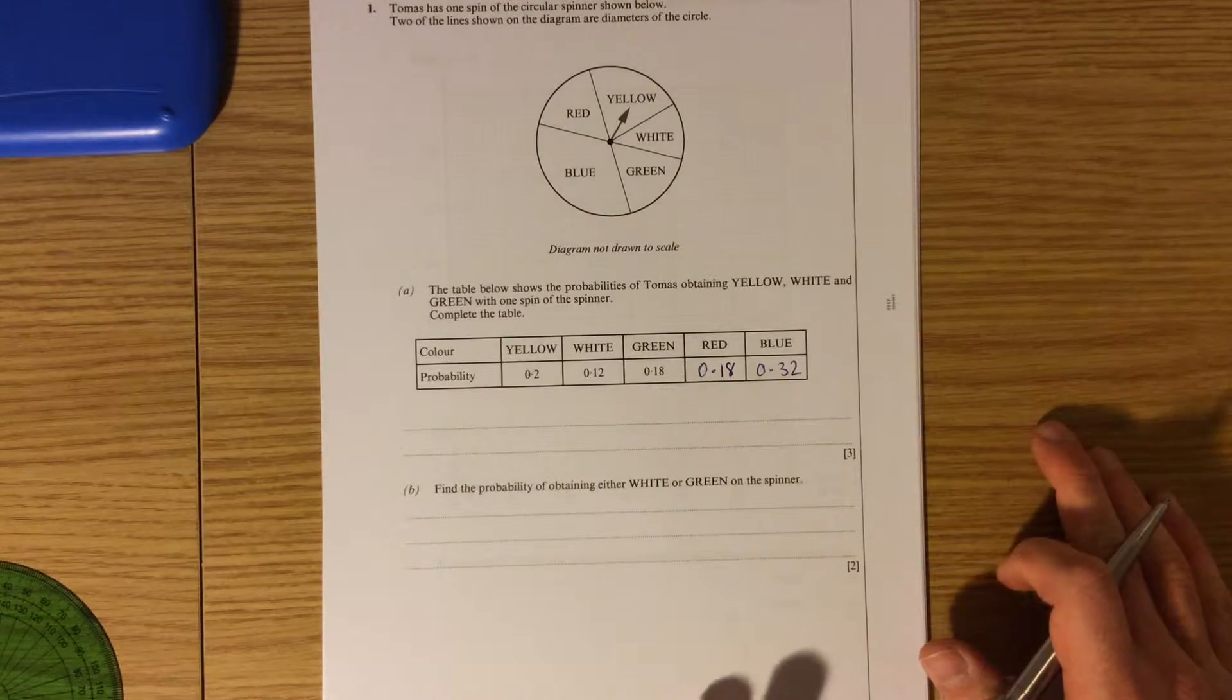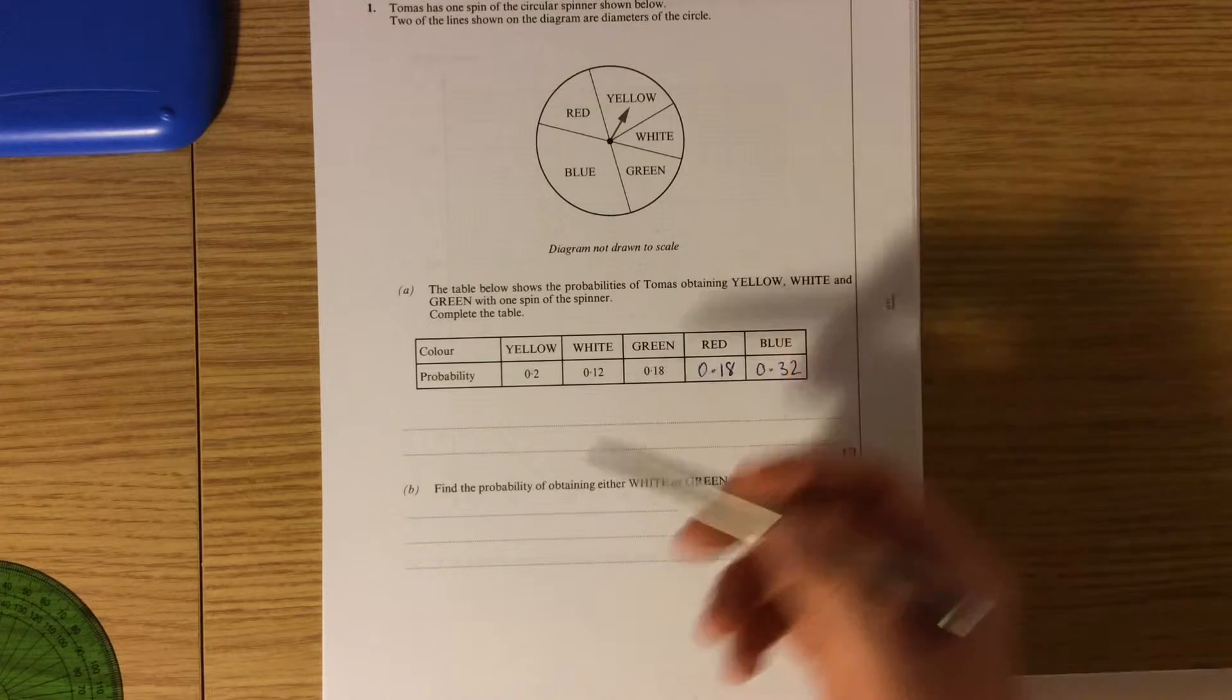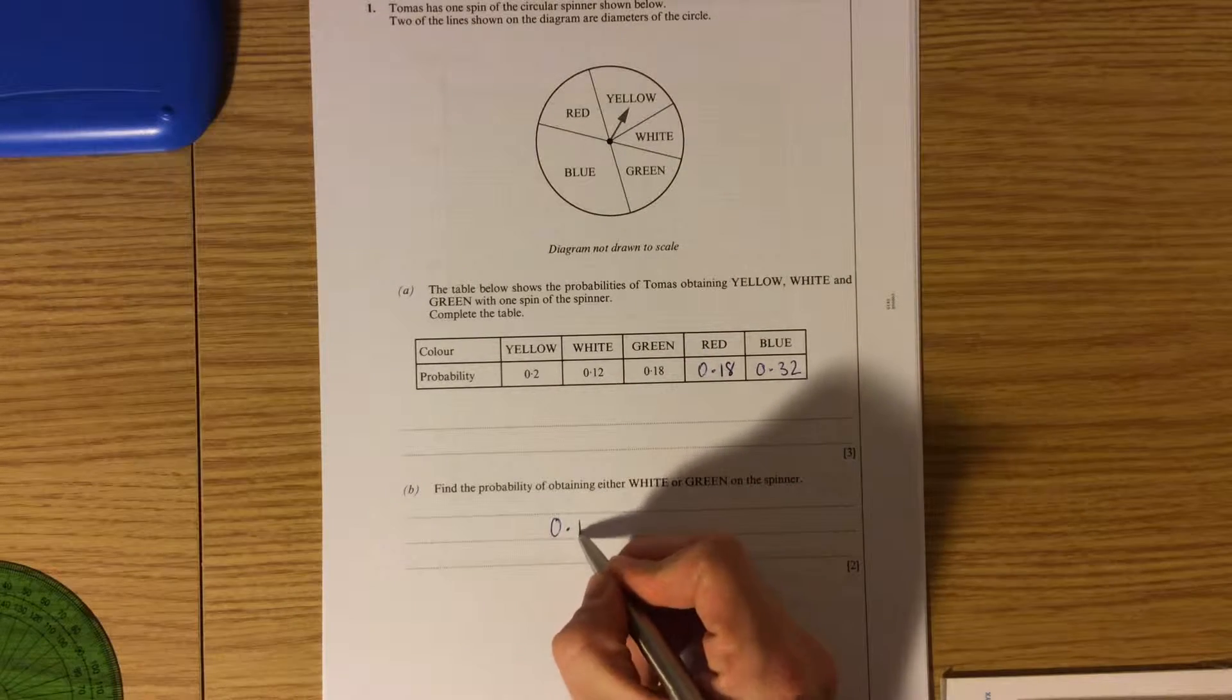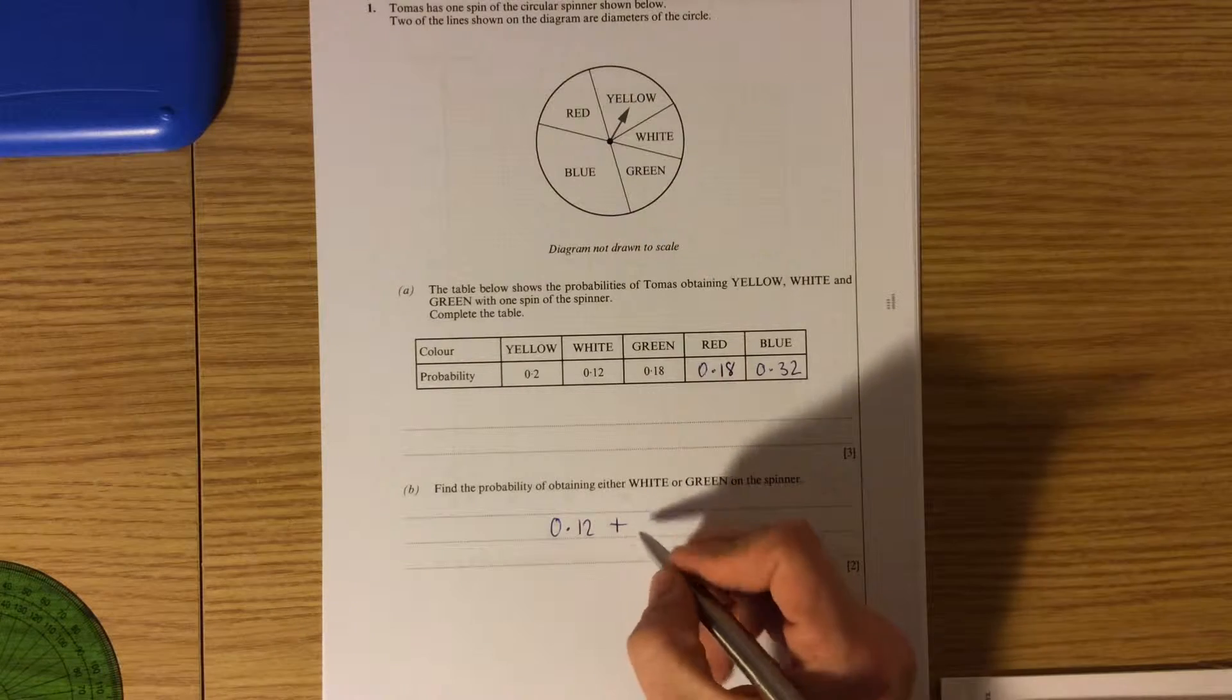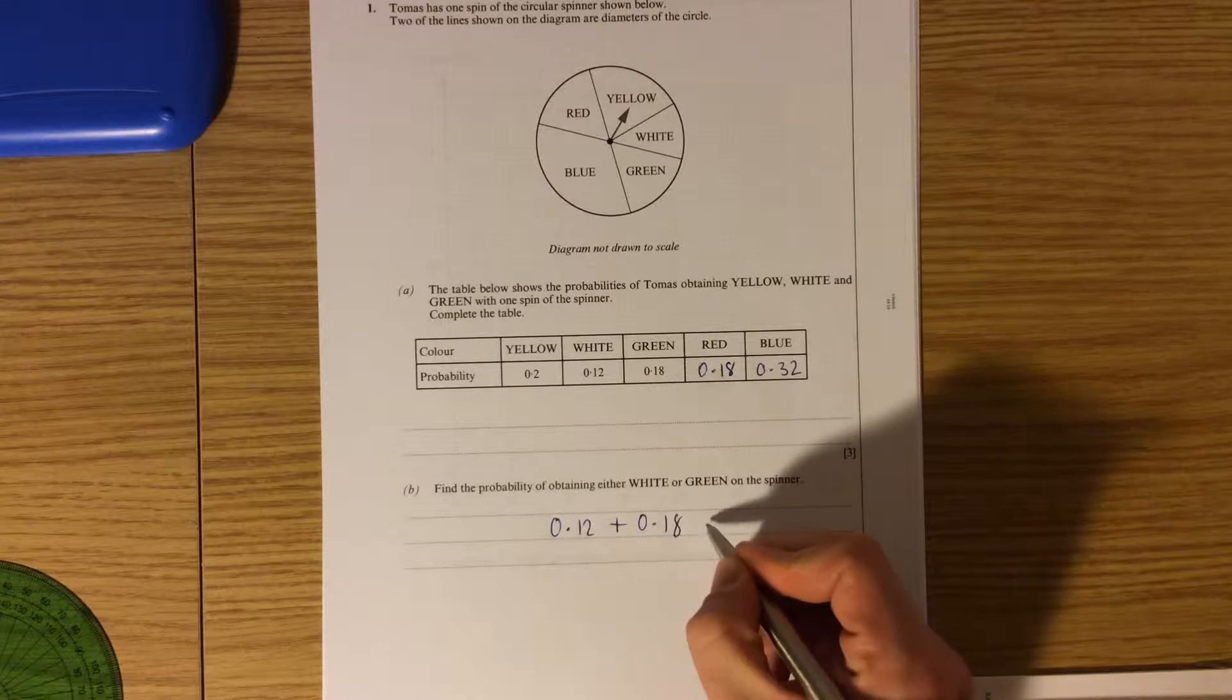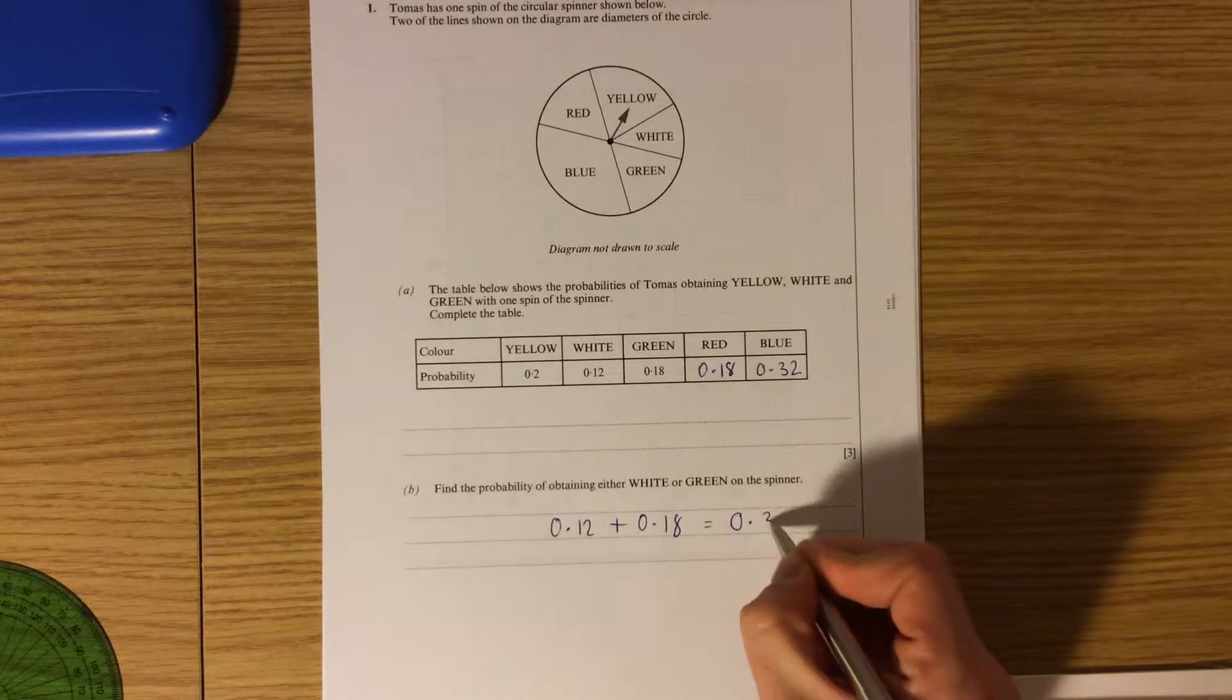Find the probability of obtaining either white or green. So white or green means the probability of white which is 0.12, or which is represented by 'and', or green which is 0.18. We find that the probability is 0.3.